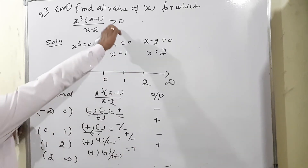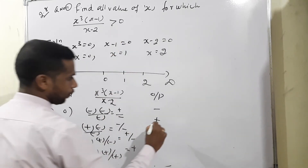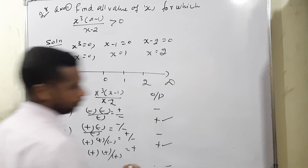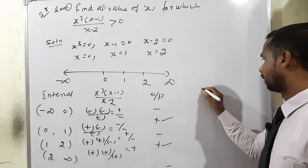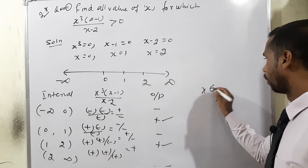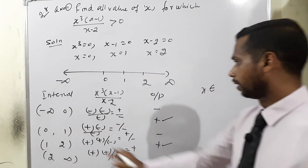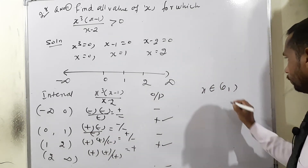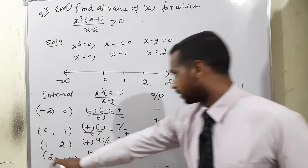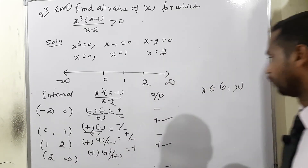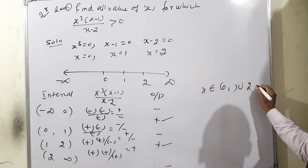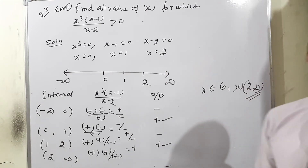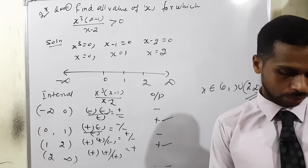The condition is ≥ 0, so we need positive values: second and fourth intervals. Therefore x belongs to (0,1) ∪ (2,+∞).